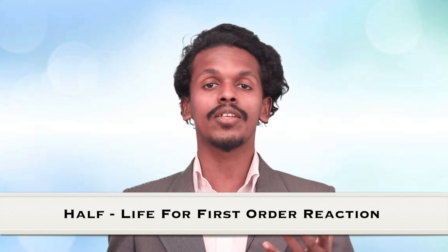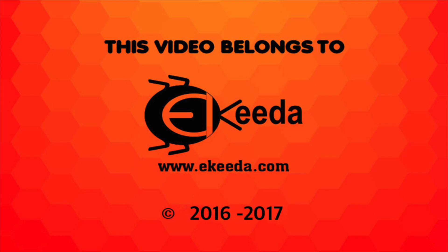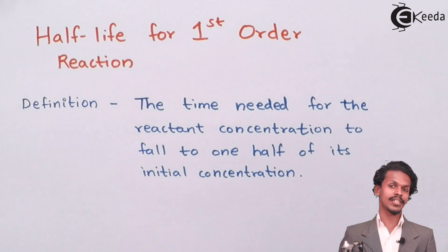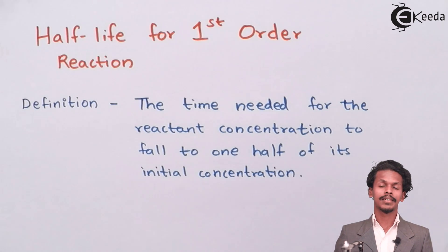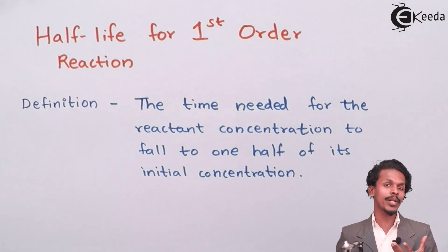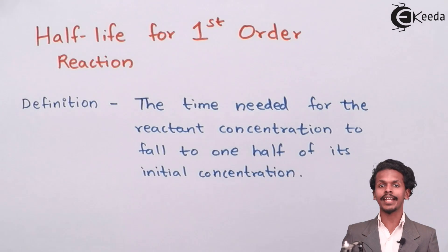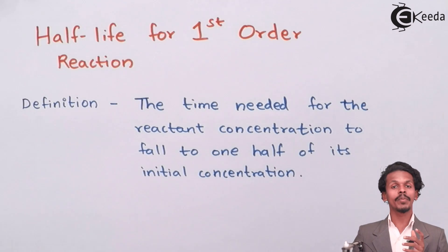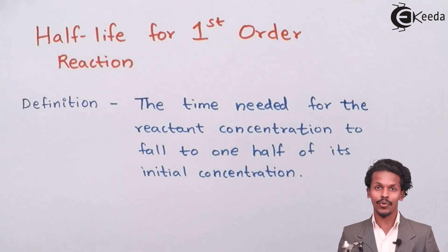So students, in the last lecture we studied what is the integrated rate law for a first order reaction. And now we are going to learn what is half life, and we will derive an equation based on half life for the integrated first order reaction.